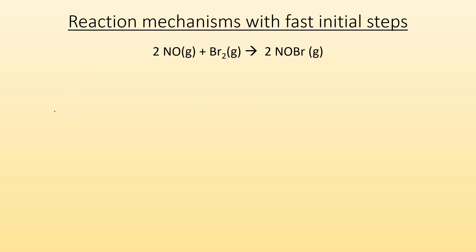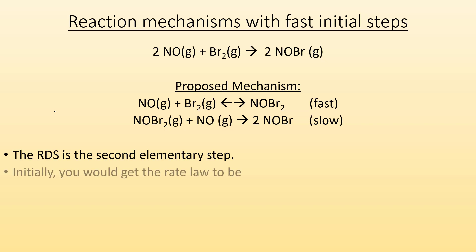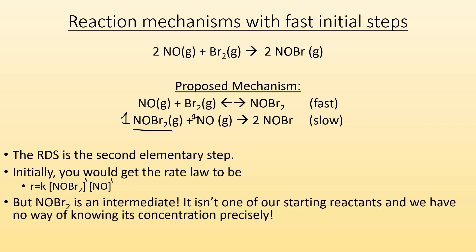Things get a little more complicated when we have reaction mechanisms with a fast initial step. If this is my overall reaction and my proposed mechanism has a fast first step, that tells me the second step is going to be my rate determining one — and it's the one I have to use to figure out my rate law. So initially you would get a rate law expression: I have NOBr2 with a coefficient of one, so NOBr2 to the first power, and NO with a one in front of it, so NO to the first power. But there's a problem — NOBr2 is an intermediate. It isn't one of our starting reactants and we have no way of knowing what its concentration is precisely. It's made and then it's used up, so it's an intermediate. It can't be in our rate law expression.